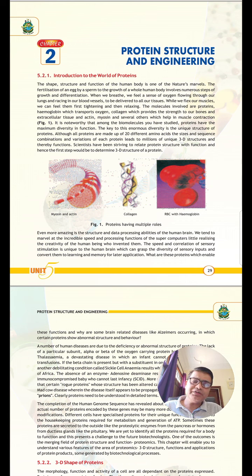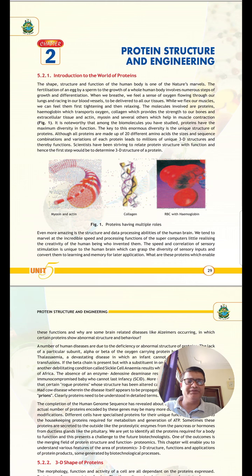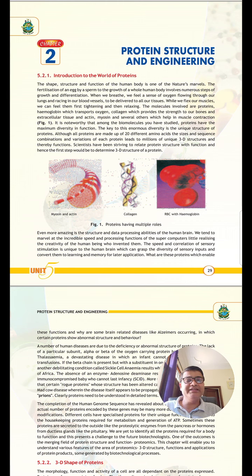What do you mean by primary structure? A protein that has only one type of bond — the peptide bond between two amino acids or more than two amino acids. There is no other bond. It is a linear chain. That is known as primary structure.